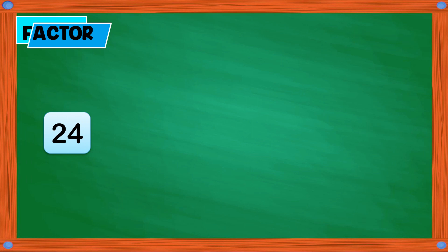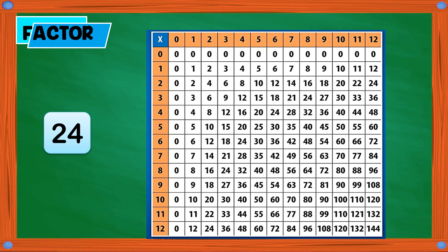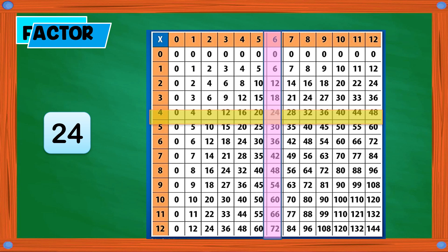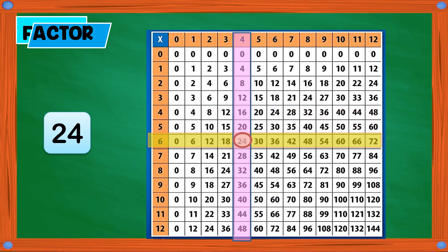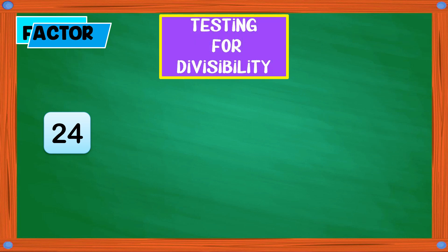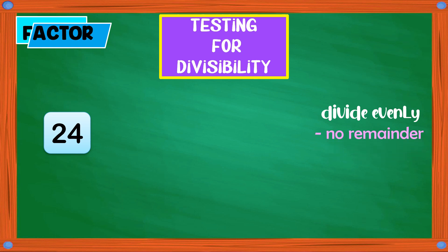Now let's have 24. To list all the factors of 24, it is very important that you have already memorized or mastered your multiplication table. As you can see, one factor of 24 is 4 times 6, or the same as 6 times 4. Another way of getting all the factors of 24 is by testing for divisibility. The word divisible means it can divide evenly, so we need to divide 24 by any number without any remainder.